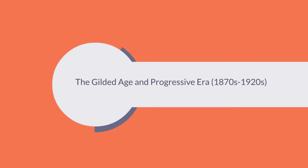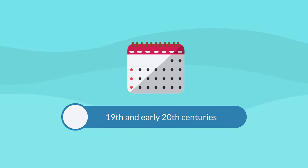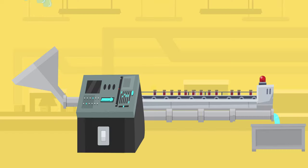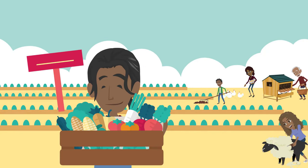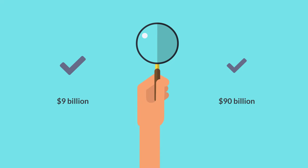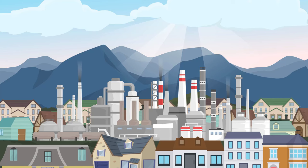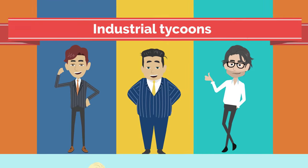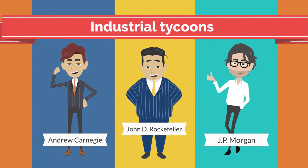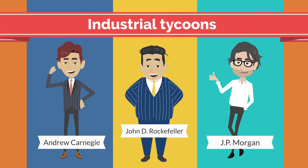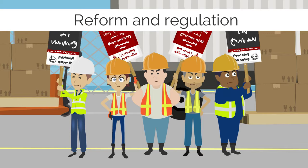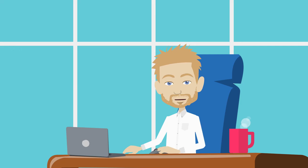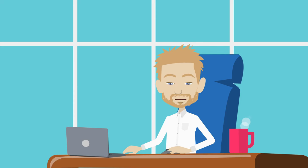The Gilded Age and Progressive Era. The late 19th and early 20th centuries saw the United States experience unprecedented economic growth and industrial expansion, fuelled by technological innovation, immigration and capital investment. In these 50 years, the US economy had grown from a GDP of under $9 billion to over $90 billion and was now the largest in the world. The Gilded Age, characterised by rapid industrialisation, urbanisation and wealth accumulation, witnessed the rise of industrial tycoons such as Andrew Carnegie, John D. Rockefeller and JP Morgan, who amassed immense fortunes and consolidated control over key industries. The era also saw the emergence of labour unrest, social inequality and political corruption, leading to calls for reform and regulation. The Progressive Era that followed sought to address these issues through government intervention, antitrust legislation and social welfare programmes aimed at promoting social justice, consumer protection and economic opportunity.